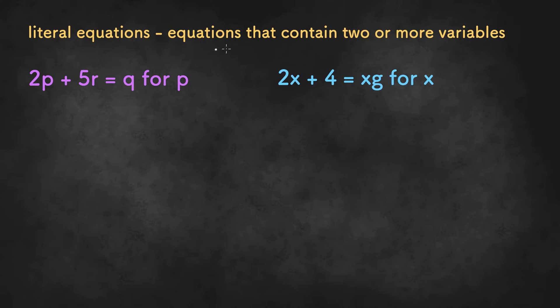First of all, literal equations are equations that contain two or more variables in them. In the first example, there are three variables, P, R, and Q. And in the second example, there are two, X and G.